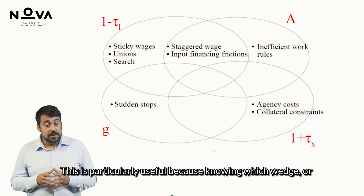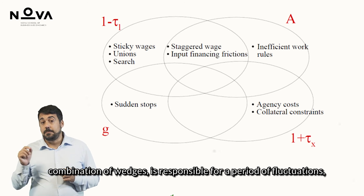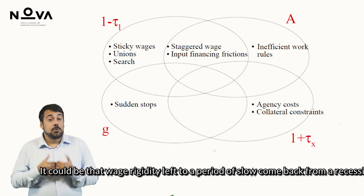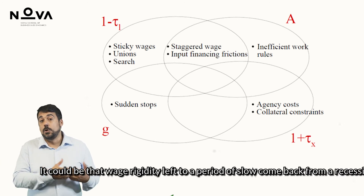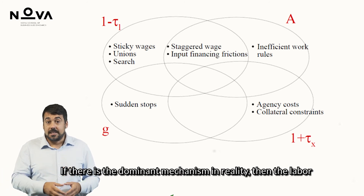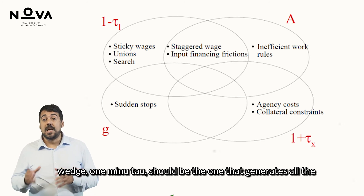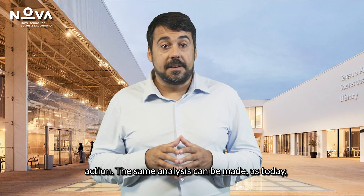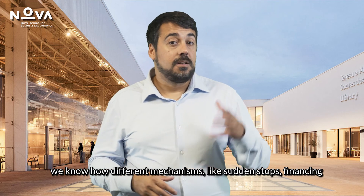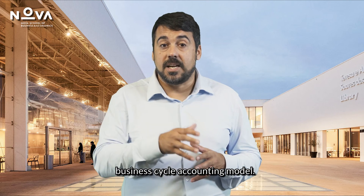Knowing which wedge or combination of wedges is responsible for a period of fluctuations, we can look in the literature for candidate explanations. For instance, if wage rigidity led to a slow recovery from recession and is the dominant mechanism in reality, then the labor wedge (1 minus tau_L) should generate all the action. Today we know how different mechanisms — like sudden stops, financing restrictions, and others — show up as wedges in the baseline business cycle accounting model.